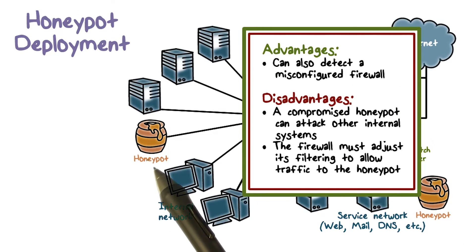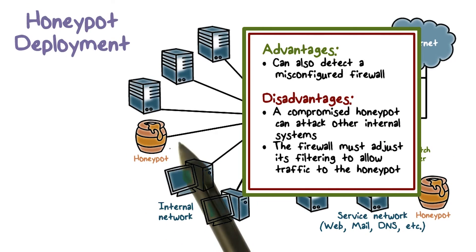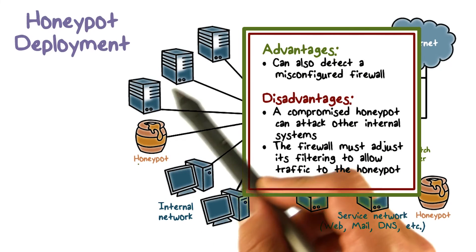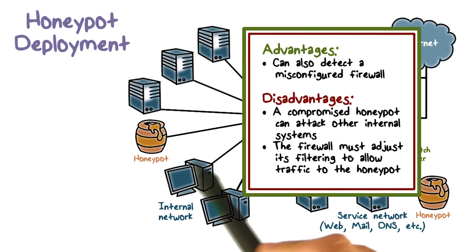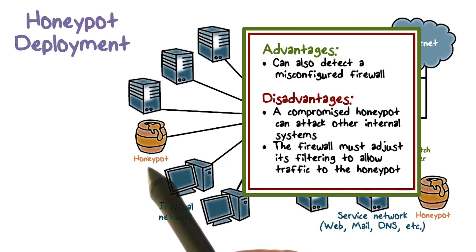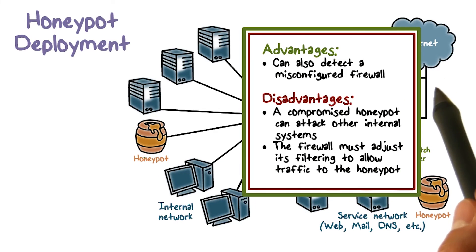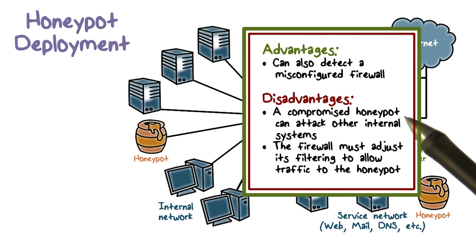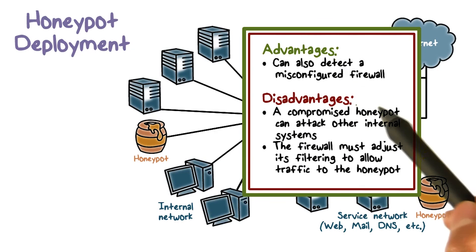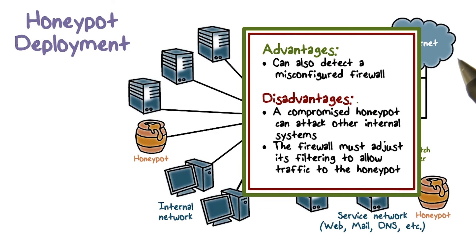On the other hand, unless we can completely trap the attacker within the honeypot, the attacker may be able to reach other internal systems from the honeypot. In addition, in order to continue to attract and trap attackers to the honeypot, we must allow attack traffic from the internet to the honeypot. This means we must open up the firewall to allow attack traffic to come from the internet to the internal network, and this carries a huge security risk.